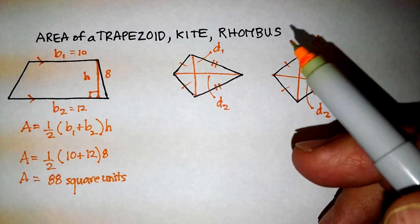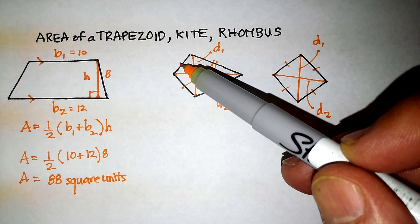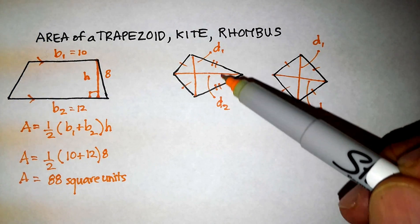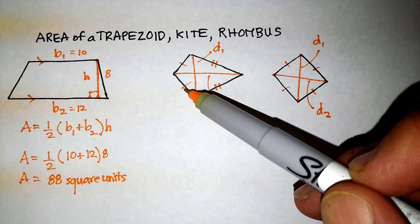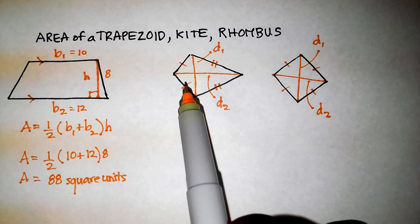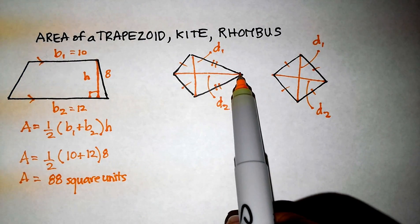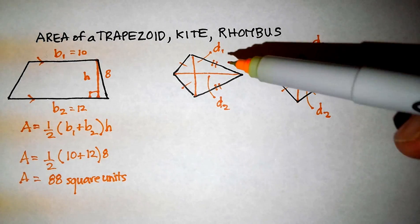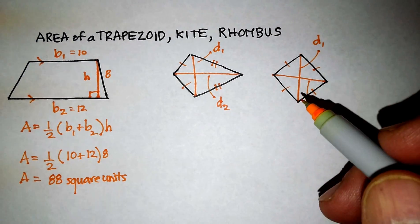Remember the definition of a kite. A kite has consecutive sides are congruent. Not opposite sides, but consecutive sides. So this one and this one are congruent. This one and this one are congruent. Remember also that connecting from one end to the other is called a diagonal. We have diagonal 1 and diagonal 2.